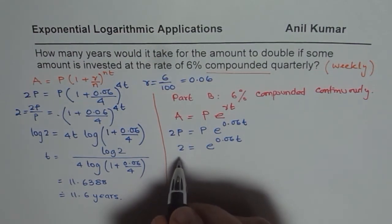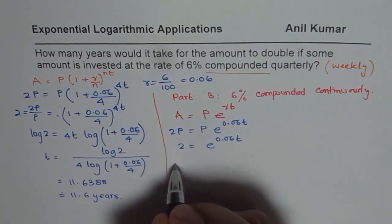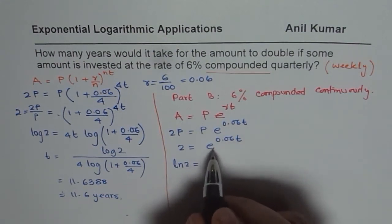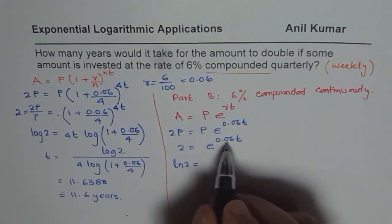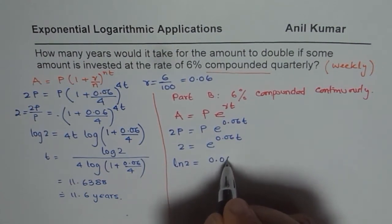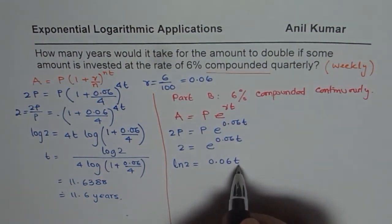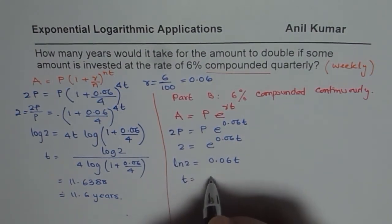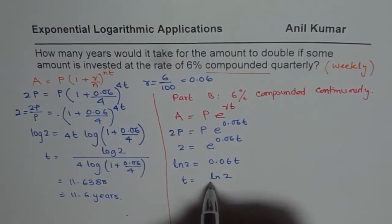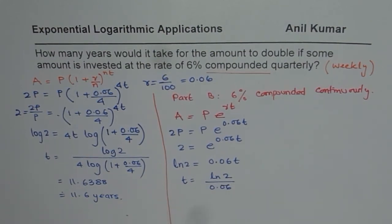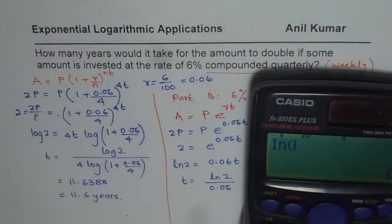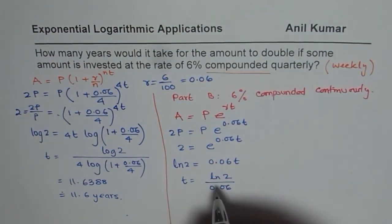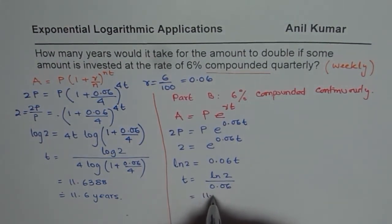Since e is the base, we will take the natural log (ln). We get ln 2 equals — when you take log to the base e of e to the power of 0.06T — you get the exponent itself, which is 0.06T. From here, T equals ln 2 divided by 0.06. Using the calculator, ln 2 divided by 0.06 equals 11.55.